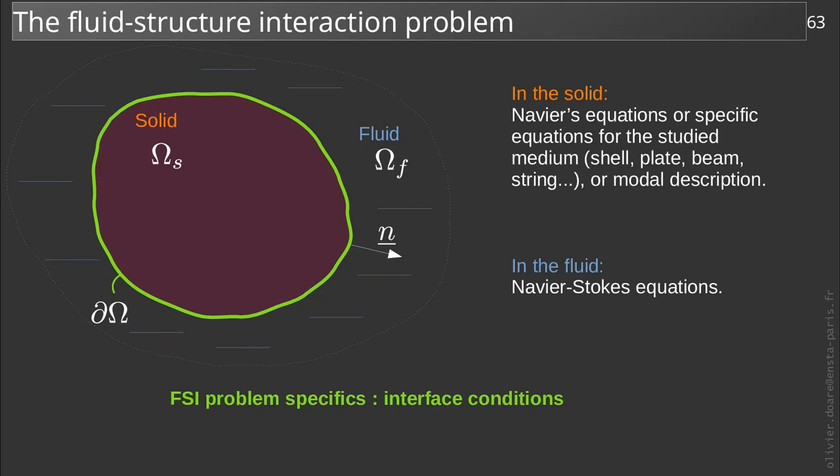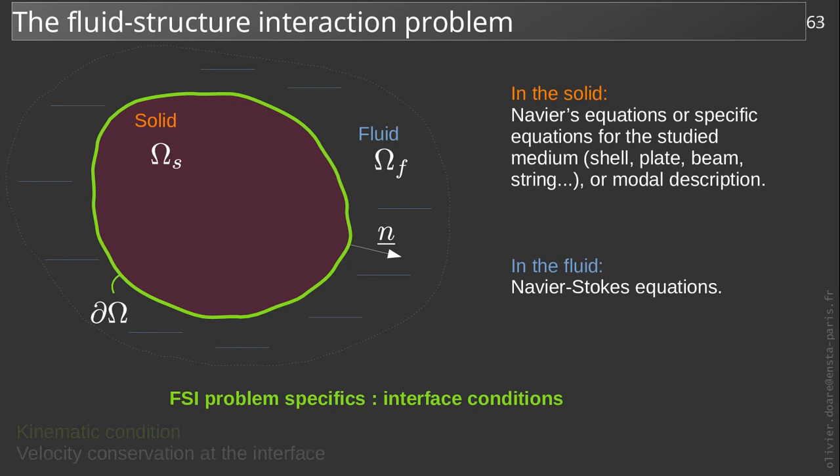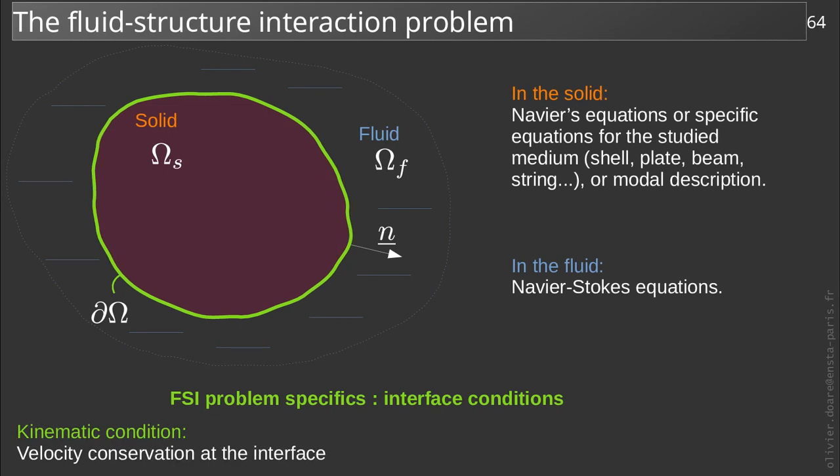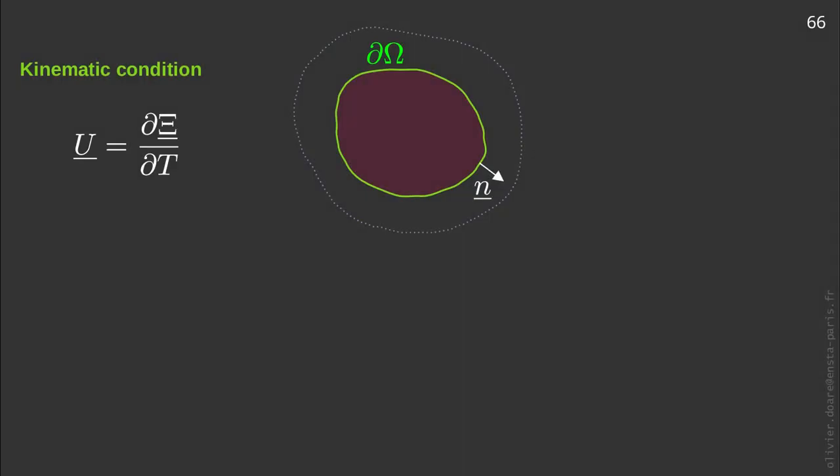We will introduce two conditions at this interface. The first one consists in considering equal velocity of the fluid and the solid at the interface. This condition is called kinematic condition. The second condition consists in imposing equal stresses at the interface. This is the dynamic condition. The kinematic condition thus writes U equal dξ on dt, and the dynamic condition consists in the continuity of sigma scalar n at the interface.